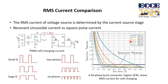One major difference between resonant soft-charging and PWM soft-charging is the RMS current. Without the decoupling capacitors, the RMS current of the voltage source is determined by the current source stage. The resonant soft-charging current is always a sinusoidal current. The PWM soft-charging current is affected by the duty ratio and the phase number. With a small duty ratio, the peak current is high and the RMS current is also high. With a small number of buck phases, the pulse number will increase and the amplitude of each pulse is lower.